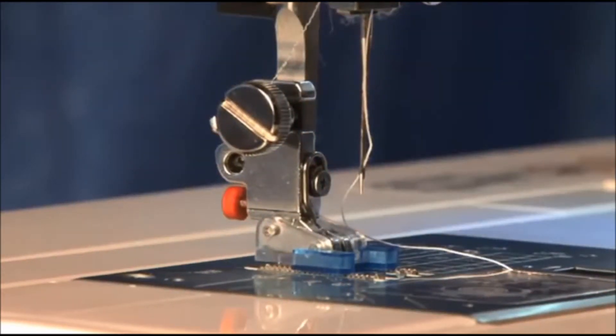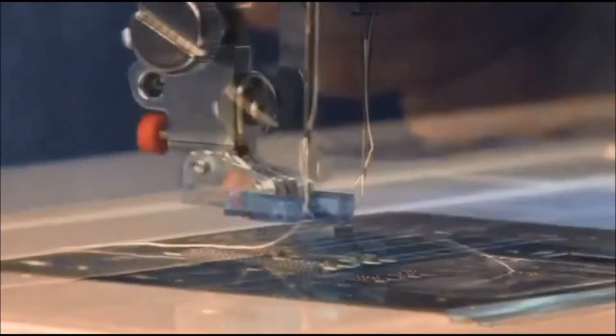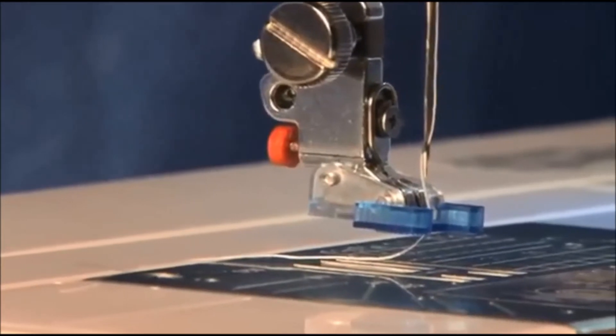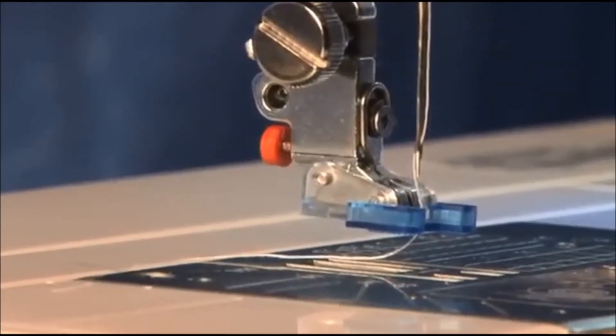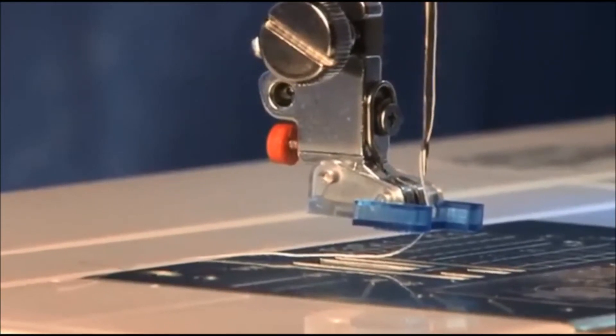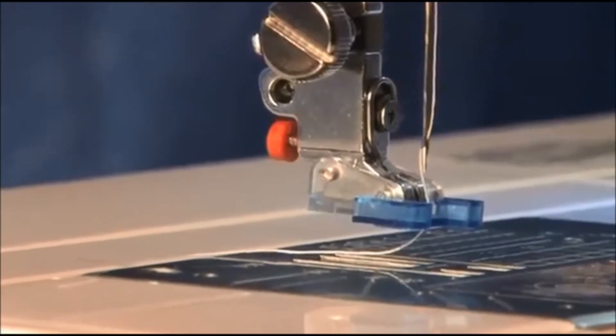Some Janome machines have a button sew-on feature which will automatically lower the feed dogs, or you can use a zigzag stitch but be sure to lower the feed dogs manually. Set your button under the foot and lower it in place.